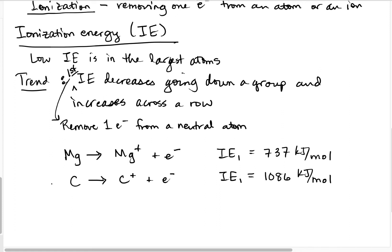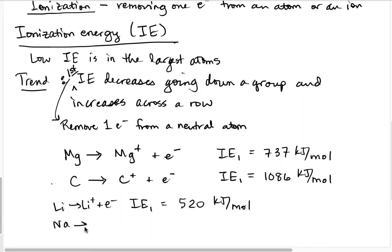Going down a group, ionization energy decreases. For example, the first ionization energy for lithium going to Li⁺ is 520 kJ/mol, compared to sodium at 496 kJ/mol. It's not a lot smaller, but it is a bit smaller as we go down the group.